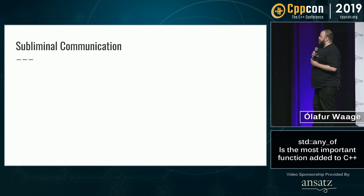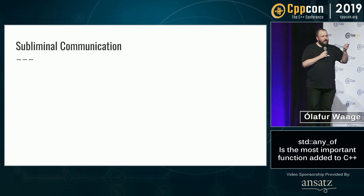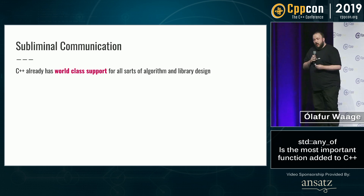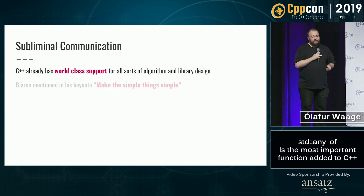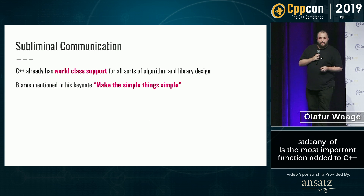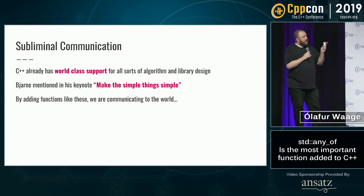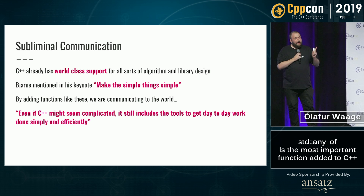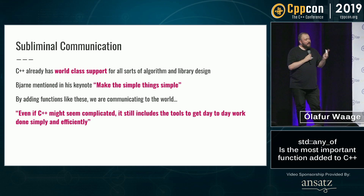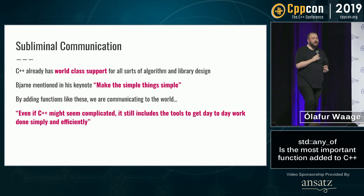There is a subliminal communication that happens when you add things like std::any_of and the other two. C++ already has world-class support for all sorts of algorithms and library design. Bjarne even mentioned it in the keynote: you should make simple things simple. By adding functions like these, we are communicating to the world that even if C++ might seem complicated, it still includes the tools to get day-to-day work done simply and efficiently.